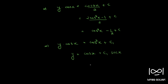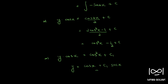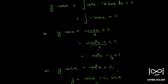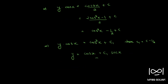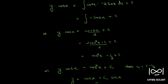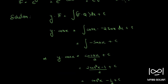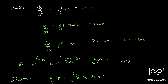This rearrangement gives us the final solution in a clean format. Note that c1 equals c minus 1 by 2, where c1 is an arbitrary constant. This is the solution to question number 249.